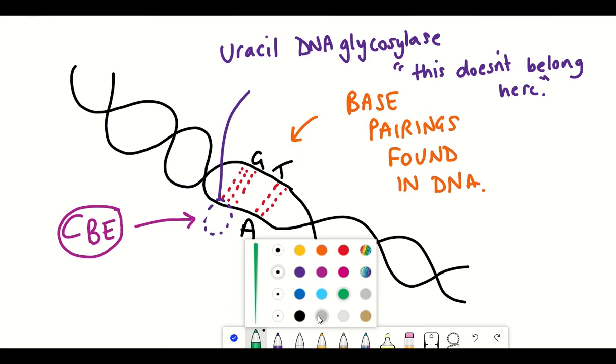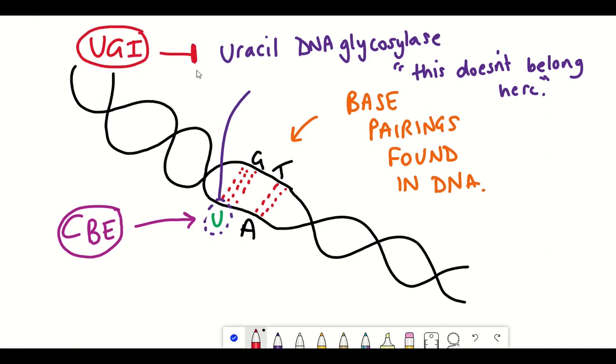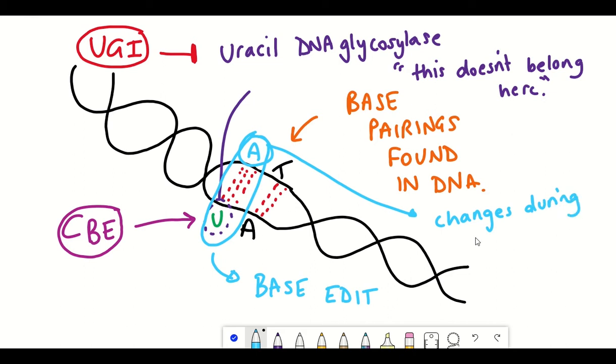However, instead of going back to cytosine, instead we want it to be read as thymine. So to do this in base editing, the complex is also fused with a uracil glycosylase inhibitor, which protects the uracil from the glycosylase until the next round of DNA replication, at which point the base from the complementary strand, so the guanine that was paired with the C before editing, is then replaced with adenine. And then you get the change from C to G to T to A. So this is one way you can edit DNA precisely without a double-stranded break.